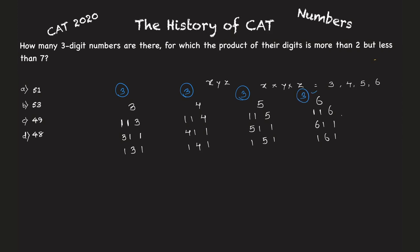These are the numbers that you can form: 113, 311, 131, 114, 411, 141, and then 115, 511, and so on. Now I can see one more thing here.